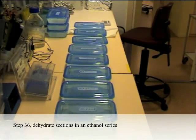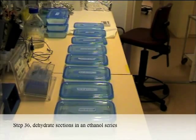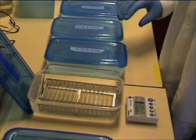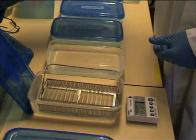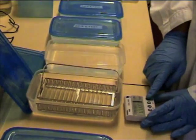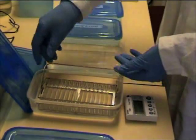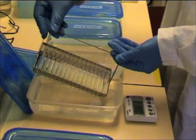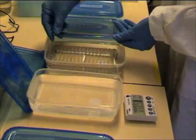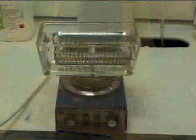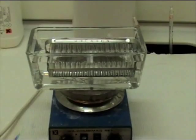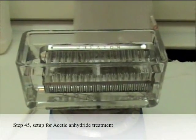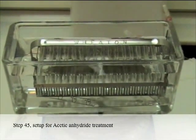Dehydrate sections in an ethanol series. Add acetic anhydride while stirring vigorously. Step 45: Setup for acetic anhydride treatment.